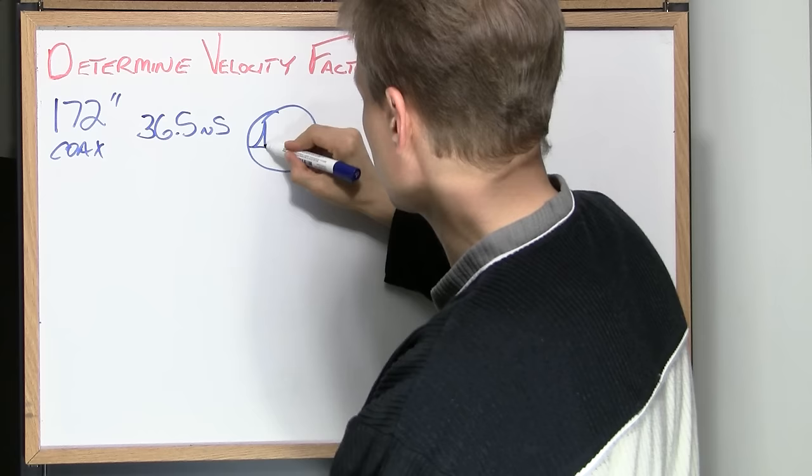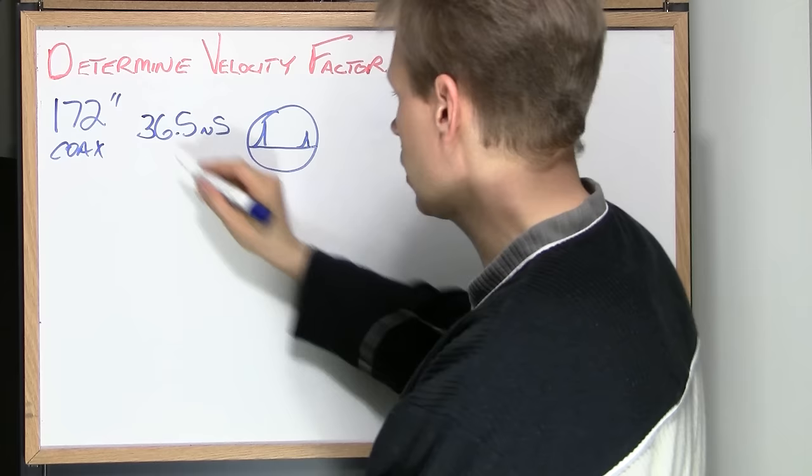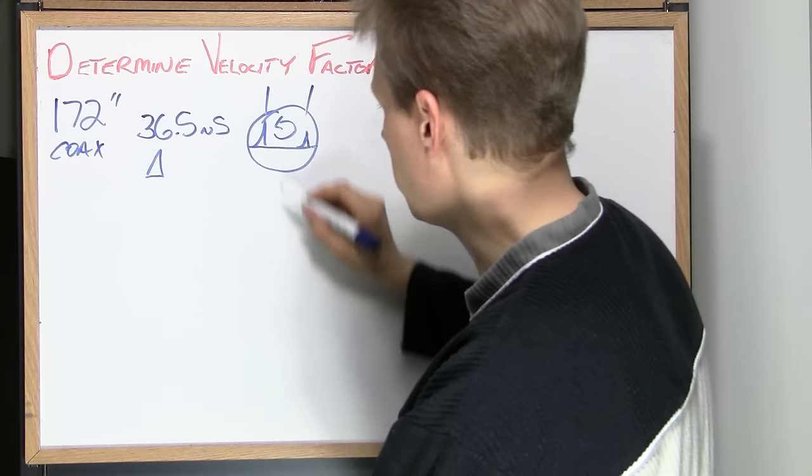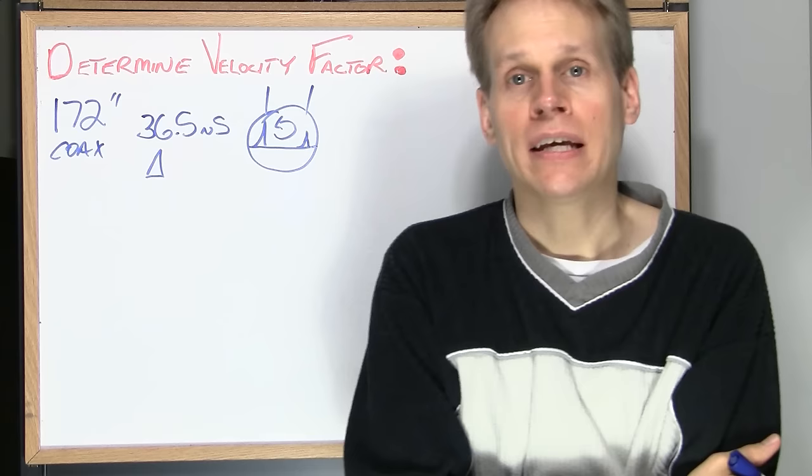Again on the oscilloscope screen we have the TDR pulse here, we have the end of the coax and the reflection here. This is the delta time between these two points and it is also the round trip time it takes for the pulse to come from the TDR, go through the coax, hit the open end and reflect back to the TDR again. So another important piece of the puzzle we need to know is that in optimum conditions electricity will travel at 11.8 inches per nanosecond.